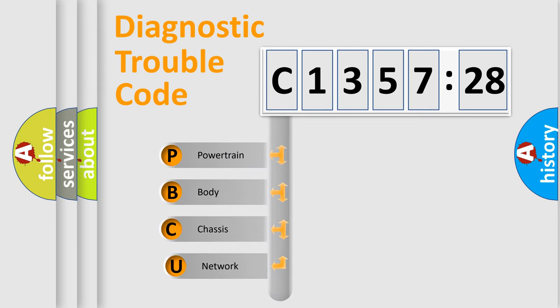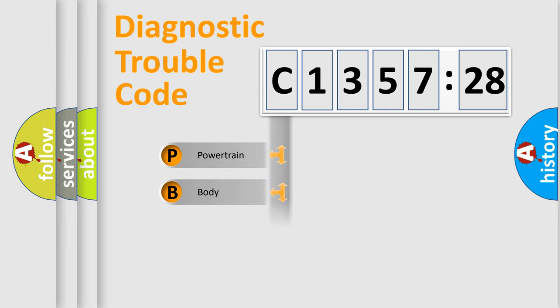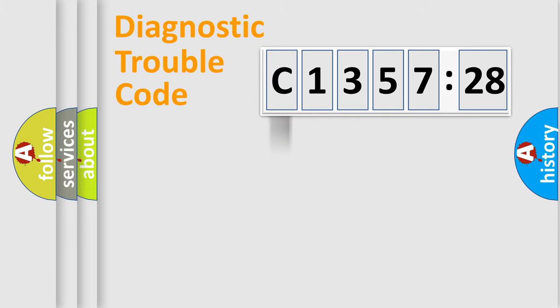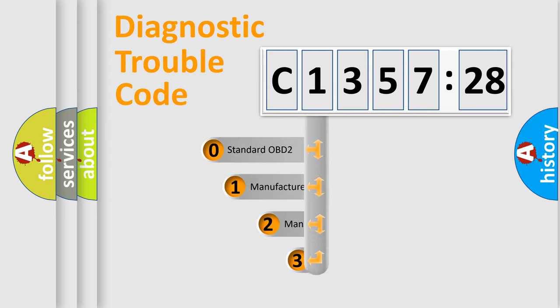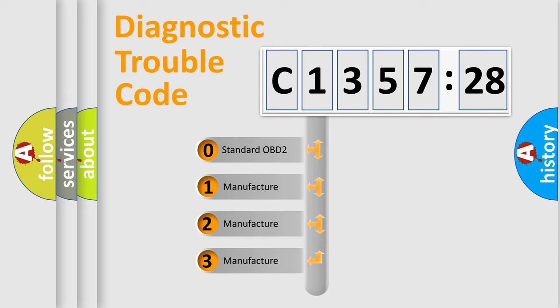First, let's look at the history of diagnostic fault code composition according to the OBD2 protocol, which is unified for all automakers since 2000. We divide the electrical system of an automobile into four basic units: Powertrain, Body, Chassis, and Network. This distribution is defined in the first character of the code.